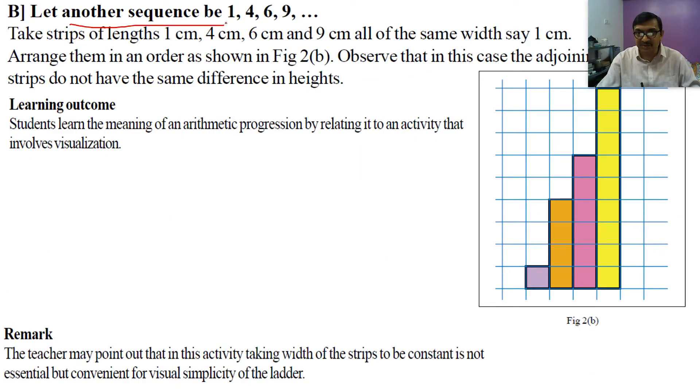Let's see an example where the sequence exists but is not in AP. Let another sequence be 1, 4, 6, and 9. We do the same work: take strips of length 1 cm, 4 cm, 6 cm, 9 cm, all of the same width 1 cm. Arrange them in order as in Figure 2B. Observe that in this case the adjoining strips do not have the same difference in heights.